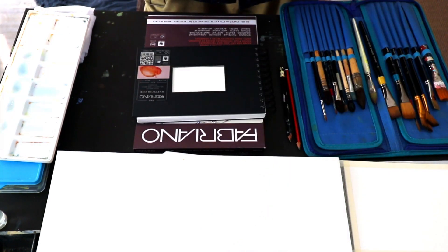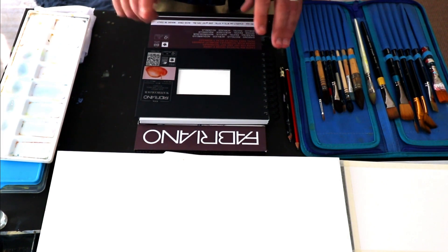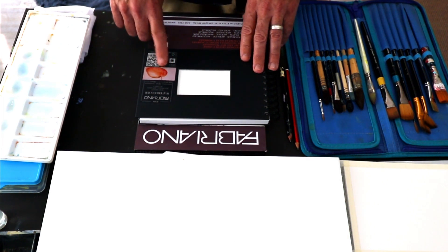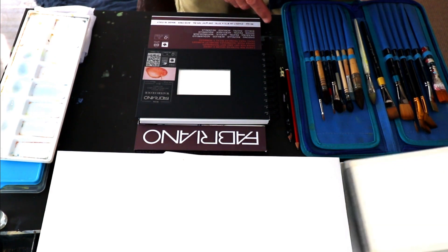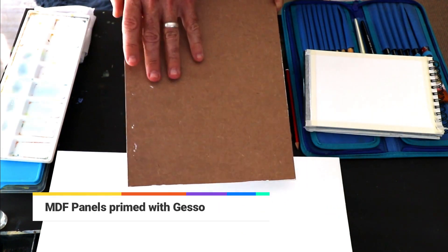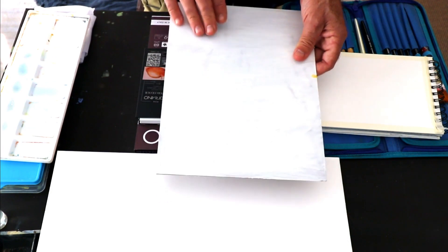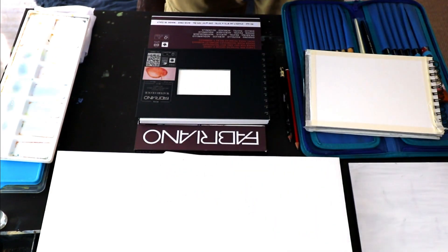And then of course you need something to paint on. Perhaps the favourite and most commonly used is paper, but you can paint on primed panels like this. This is MDF that are primed with some gesso and that'll make a good surface to paint on.